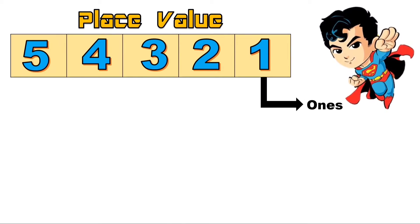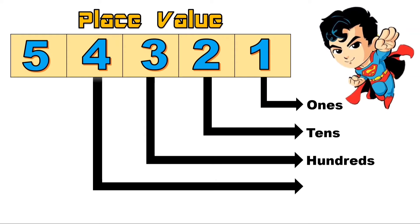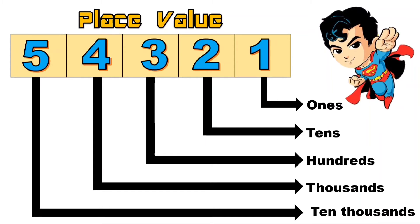The place value of 1 is ones, the place value of 2 is tens, the place value of 3 is hundreds, the place value of 4 is thousands, and the place value of 5 is ten thousands.